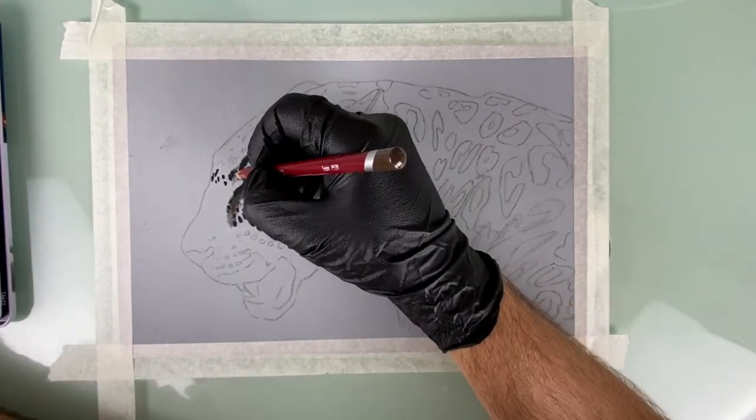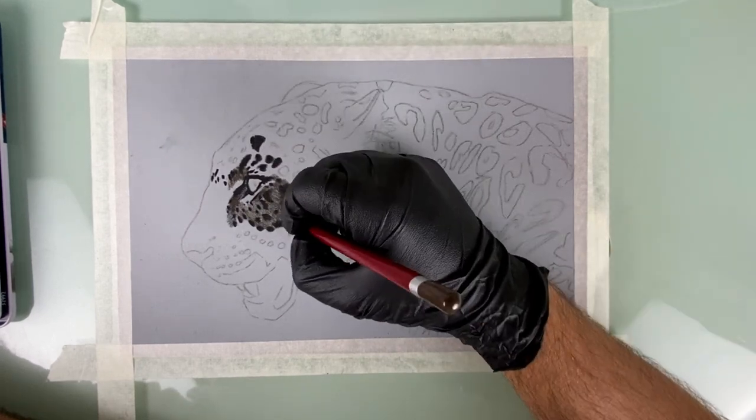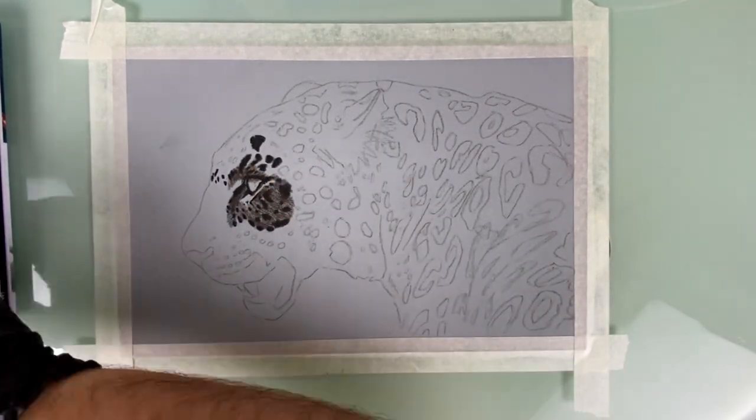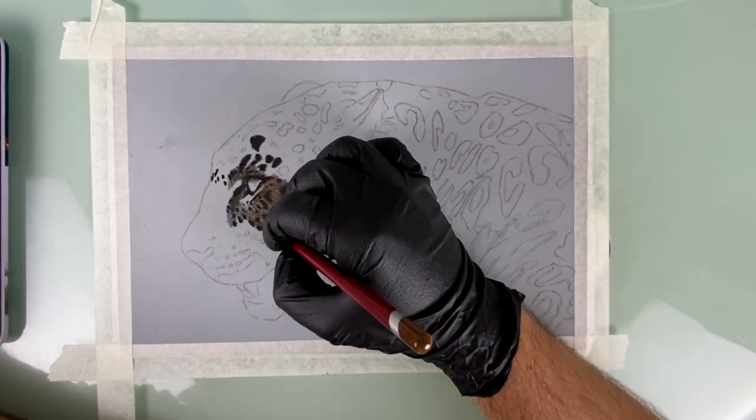Once I've done the black I block in a little undercolour using I think it's a chocolate brown and I do this just so there's a darker layer underneath that I can layer my lighter colours on top.